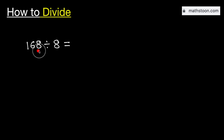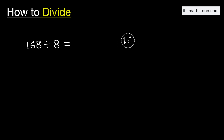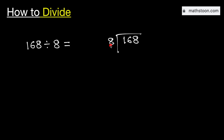Let's learn how to divide the number 168 by 8 using the long division method. See that 1 is less than 8, so we will consider the number 16. We know that 8 times 2 is equal to 16. Subtract, we get 0.